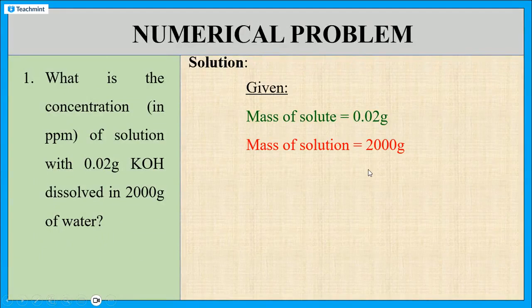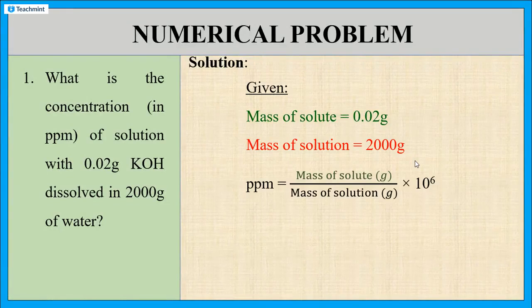We know mass of the solute as well as mass of the solution in grams. Now, we have to calculate the concentration in PPM. The PPM formula is: parts per million equals mass of the solute divided by mass of the solution times 10 to the power 6.